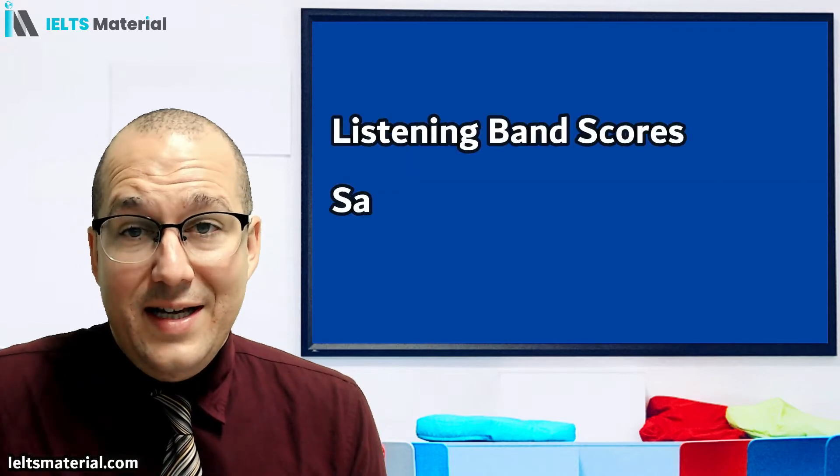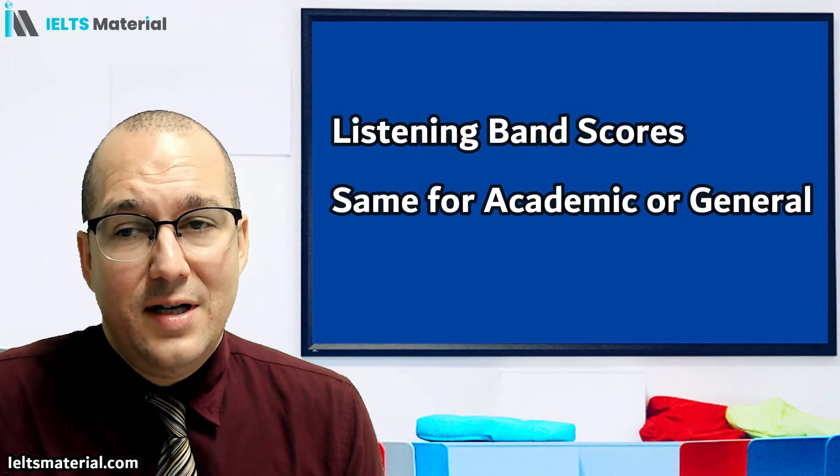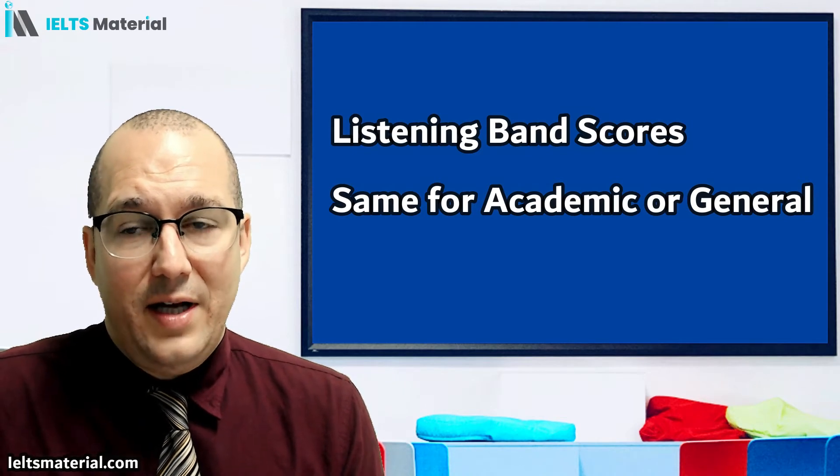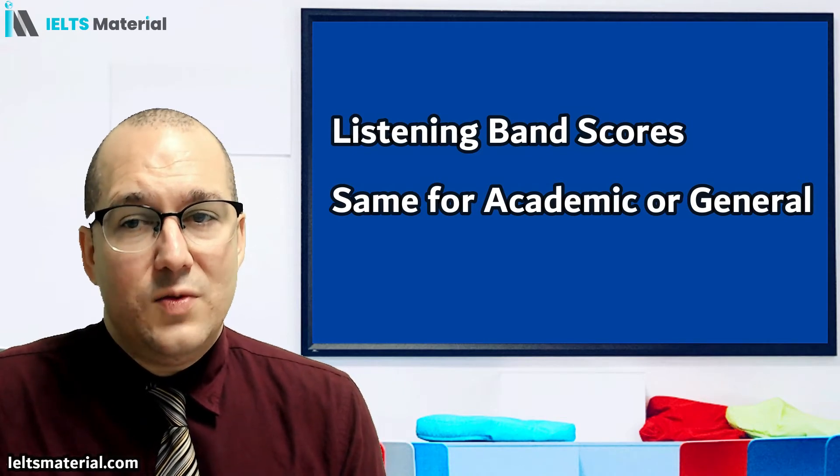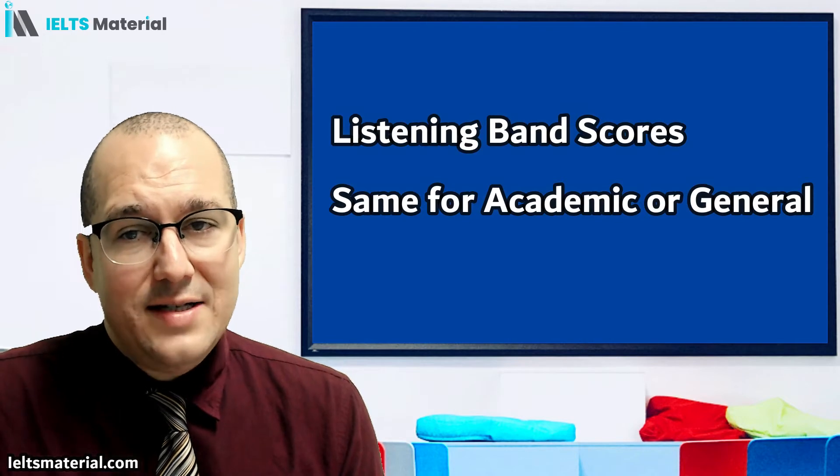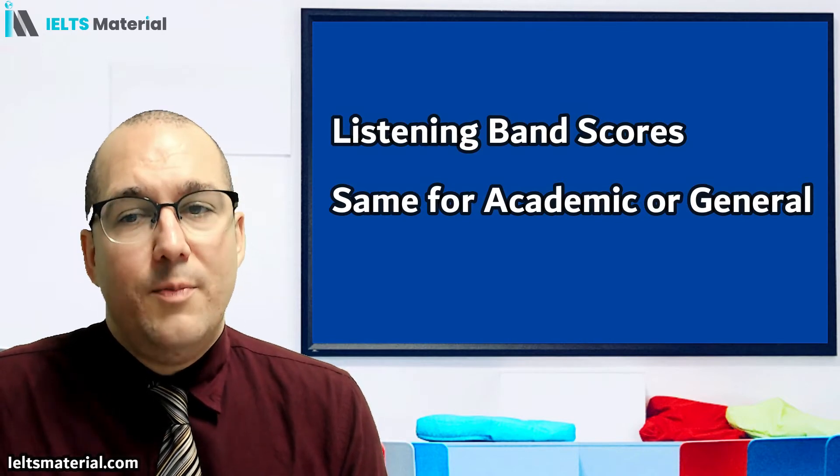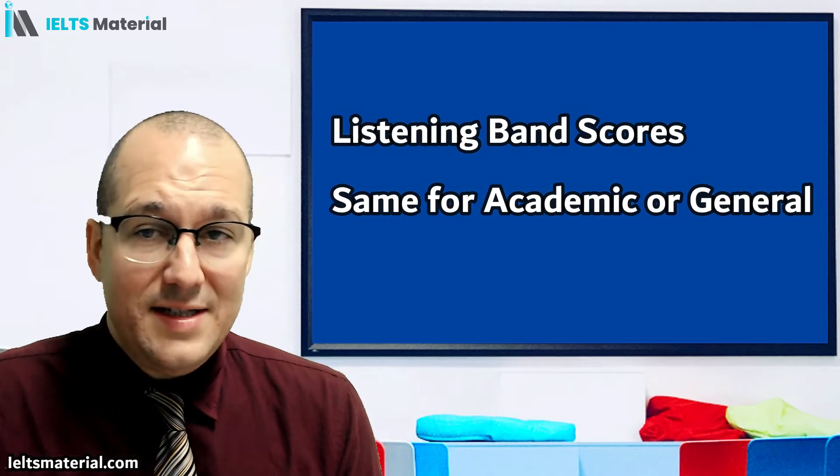Well, let's start with the easiest one first, the listening band scores. As you can see on the next page, it's very simple. There's one chart, and it's the same for academic and general, because both do the same test. So let's have a look at that now.